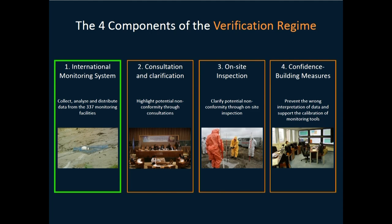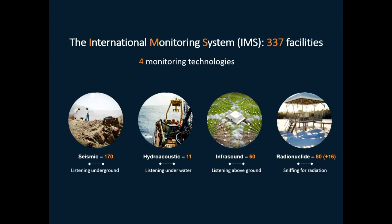This data is really important to us. The verification regime is central to the treaty. We have four different technologies that are used, totaling 337 facilities. First, we have the seismic technology used to listen underground for nuclear explosions. Then we have 11 hydroacoustic stations to listen underwater. 60 infrasound stations used to listen above ground in the atmosphere. And finally, we have the radionuclide technology that is used to distinguish explosions, whether they are of nuclear nature or not.